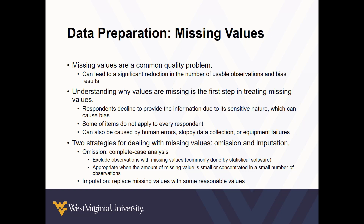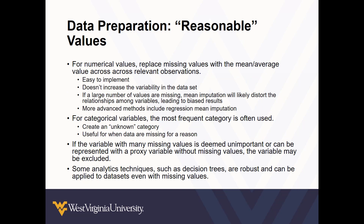Imputation, on the other hand, replaces missing values with some reasonable values. For numerical values, we replace missing values with the mean or average value across the relevant observations. This tends to be very easy to implement and doesn't increase the variability in the data set. However, if a large number of values are missing, mean imputation can likely distort the relationship among the variables and introduce bias into our analysis — and we don't want bias.